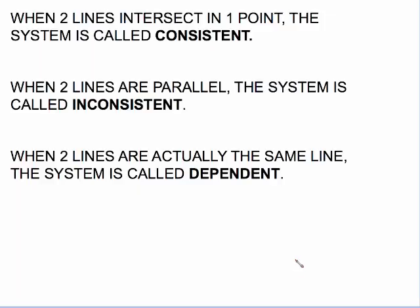So here's your definitions. When two lines intersect in one point, the system is called consistent. When two lines are parallel, the system is called inconsistent. And when two lines are actually the same line, the system is called dependent. So this is the terminology for the three situations we just saw.